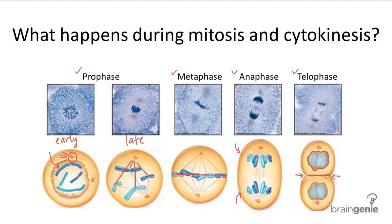The end result of mitotic division is two genetically identical daughter cells. Cytokinesis is sometimes grouped into mitosis as a fifth phase because it's so short and seamlessly completes mitosis without any particular distinct features. So the mitotic phase encompasses both mitosis and cytokinesis together.